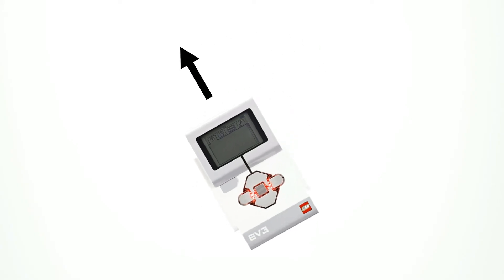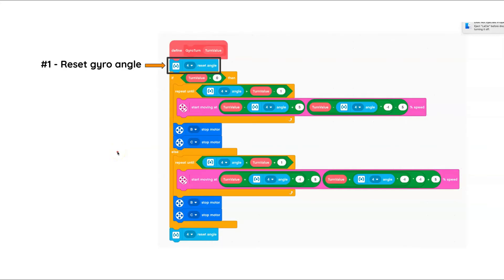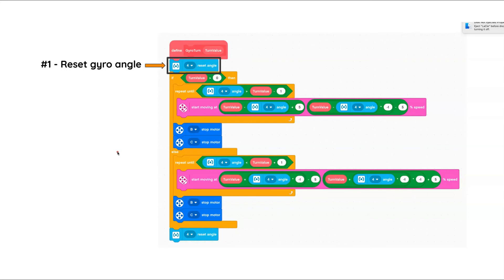Whatever you input is the direction and angle it turns. So if you input 90, it will turn to the right 90 degrees. If you input negative 80, it will turn to the left 80 degrees. The program is actually very simple to understand. To start off, the robot resets its gyro sensor, meaning any value the gyro sensor may previously have been sensing is switched back to zero.